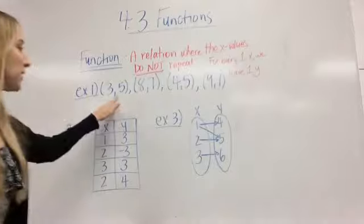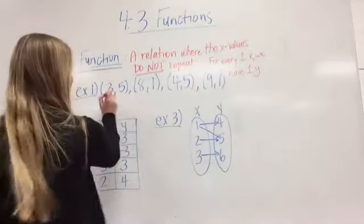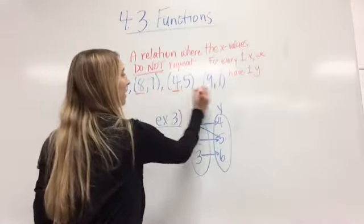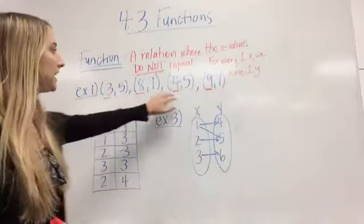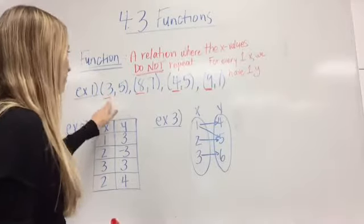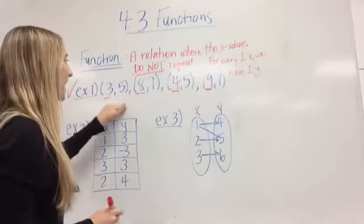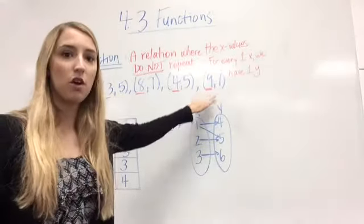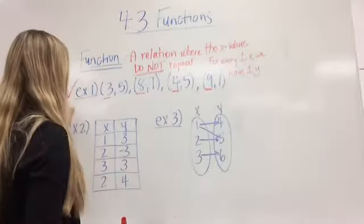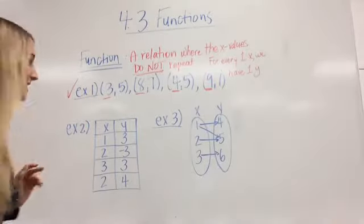Let's look at example 1. We're going to look at our x values, which are, remember, first number in an ordered pair. Do any of these repeat? Are any of them the same? You have a 3, an 8, a 4, a 9. This is a function because the x values don't repeat. They're all different x values. So put a check mark next to example number 1.